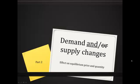This is the second of our two-part discussion on the effect of demand and supply changes on equilibrium price and quantity. In part one, we looked at the effect of a change in demand and separately the effect of a change in supply. This time we are looking at the effect of a simultaneous change in demand and a change in supply.